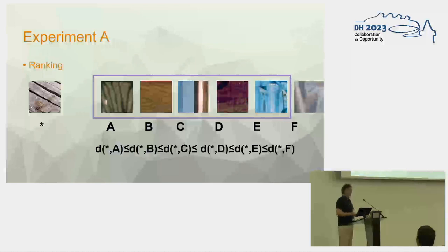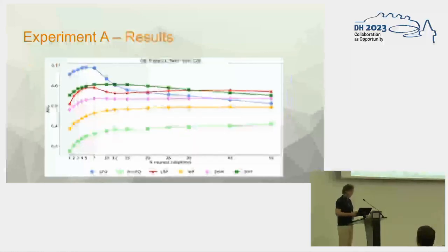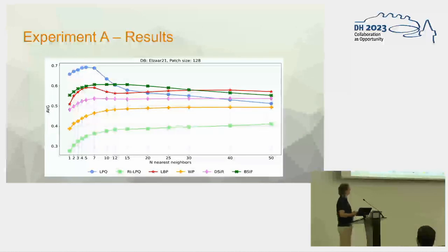And so we average this over all our query images and then we can somehow plot the results. And each color represents a different method, feature extraction method which were all classical ones in this case.